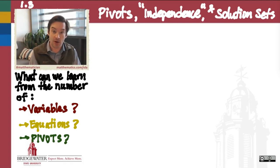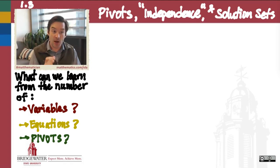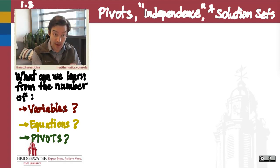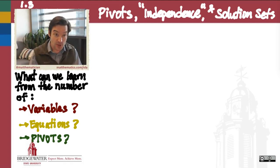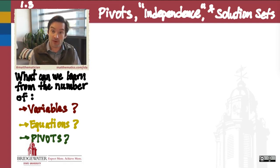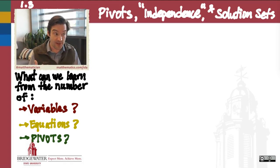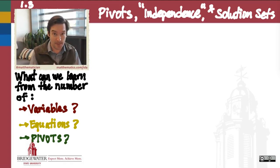And in particular, what is it telling us about the nature of the variables that participated in that system, the equations which determined that system, and most importantly, what is it telling us about what the solution set of that system actually looks like?